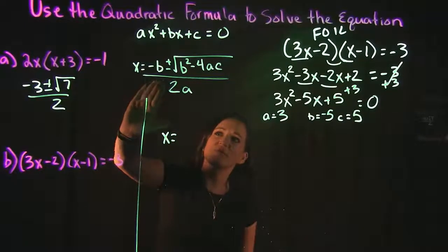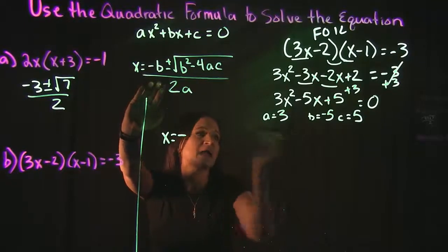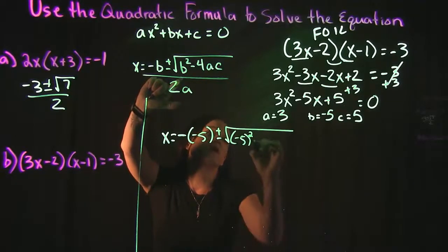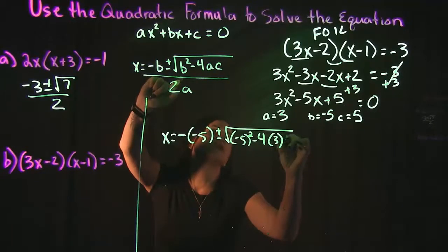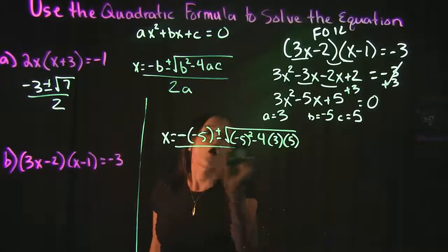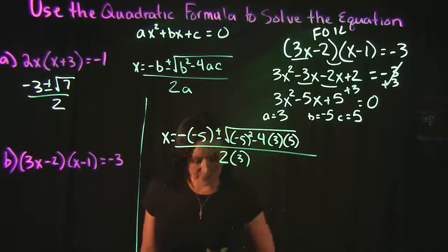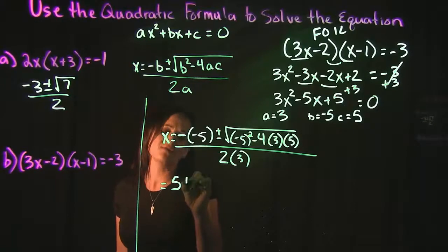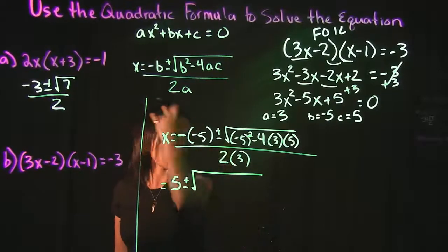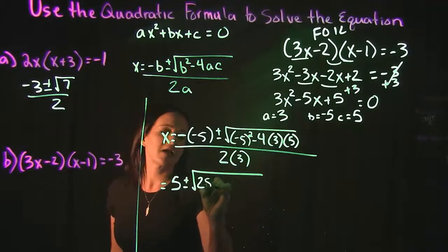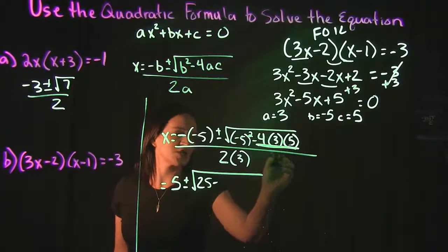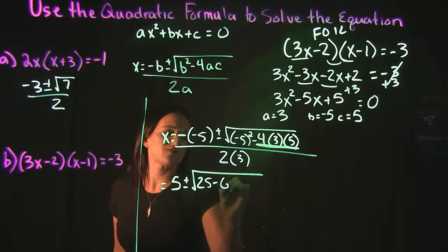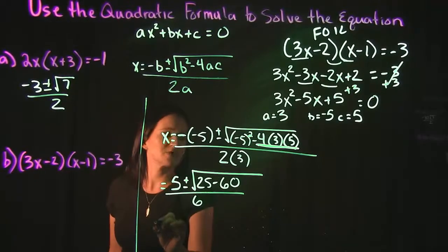Plugging into the quadratic formula: negative b — and b is negative 5, so negative times negative 5 gives a positive 5 — plus or minus the square root of b squared (negative 5 squared), minus 4 times a (which is 3) times c (which is 5), all over 2a, so 2 times 3. Cleaning up: the double negative gives positive 5 plus or minus the square root of negative 5 squared, which is 25, minus 4 times 3 times 5. 4 times 3 is 12, and 12 times 5 is 60. All over 2 times 3, which is 6.